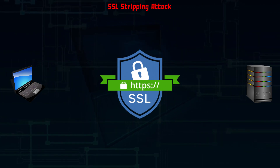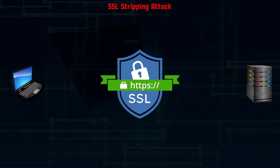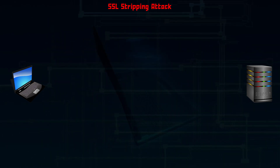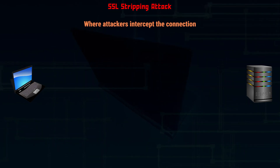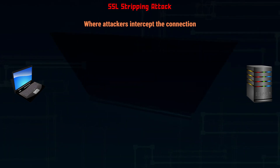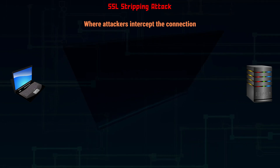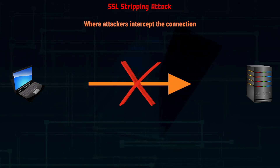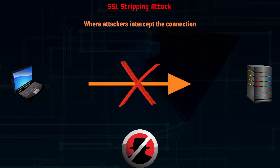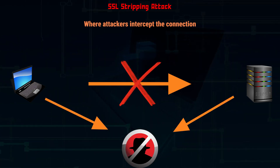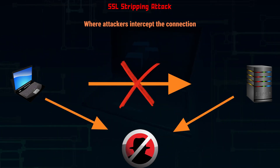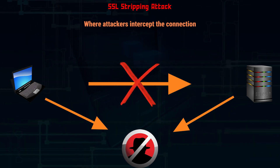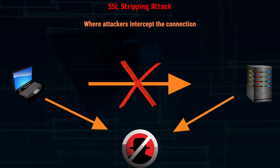Attackers cannot intrude into a secure HTTPS connection between the user and server. However, attackers intercept the connection because the initial request and HTTP redirection response is in plain text. The attacker acts as a bridge between the two parties by establishing a legitimate connection to the server via HTTPS and an HTTP connection with the user.